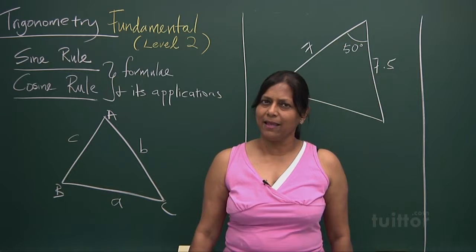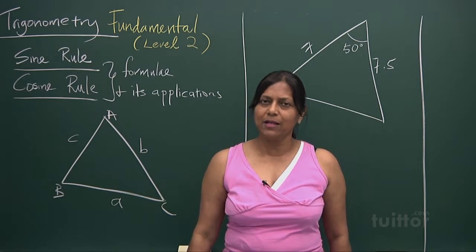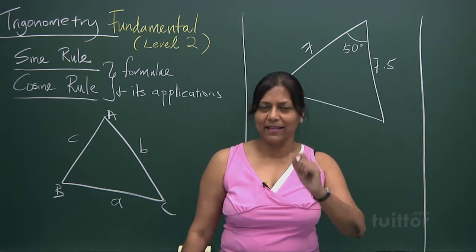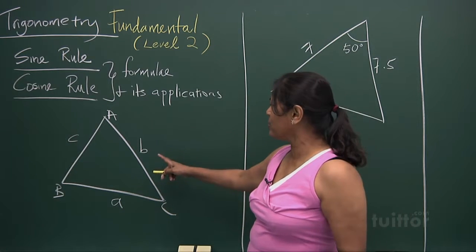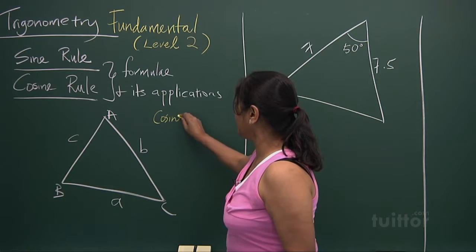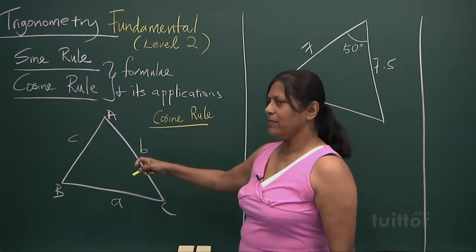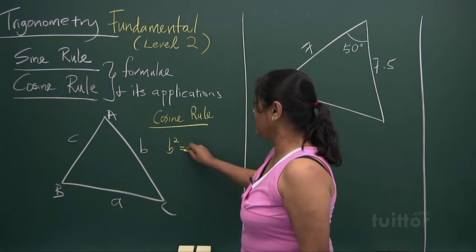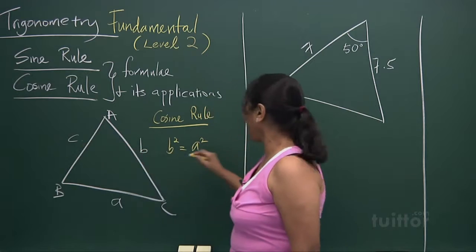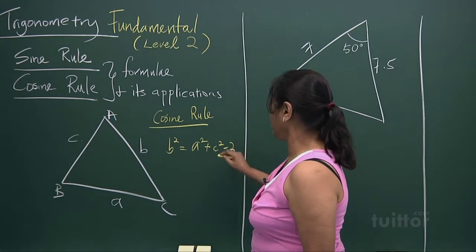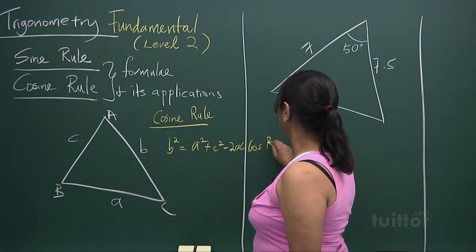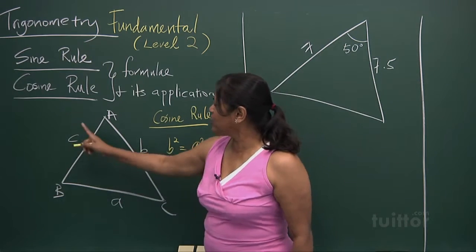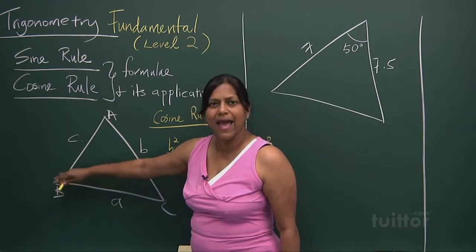In cosine rule, the formula looks a little bit complex, but I'll show you something — a little Indian dance — that connects you to the formula. In cosine rule, b squared is equal to a squared plus c squared minus two ac cos B — the angle between them.